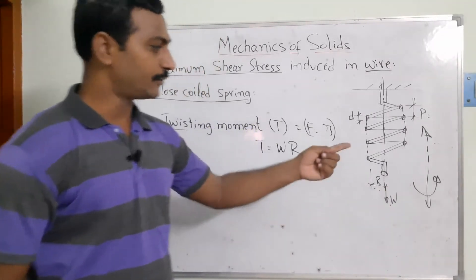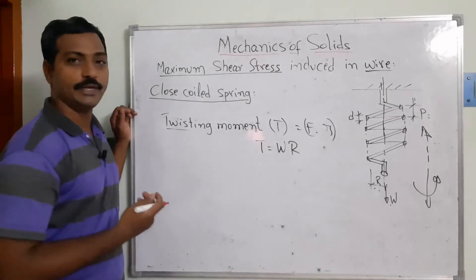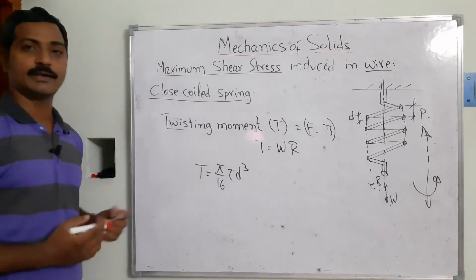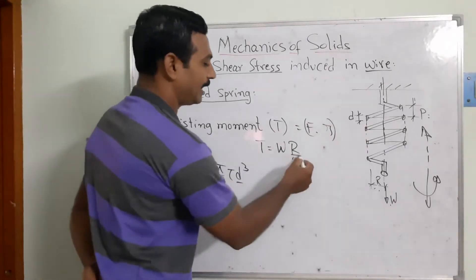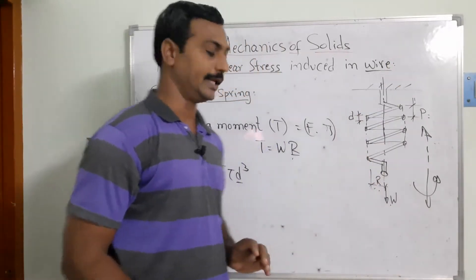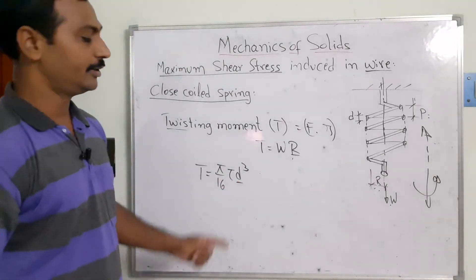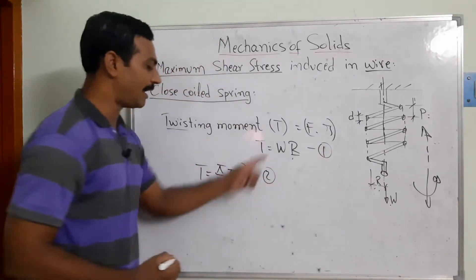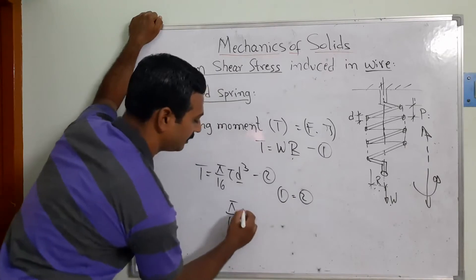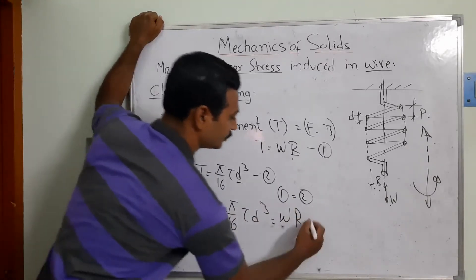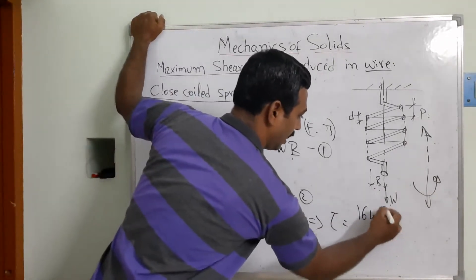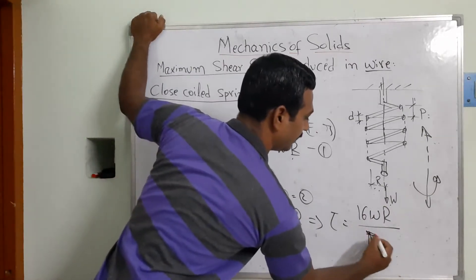The member is also subjected to torsional loads due to the motion. From the torsion formula, T = (π/16) × τ × d³. Setting this equal to W × R and comparing the two equations — (π/16) × τ × d³ = W × R — we solve for the shear stress: τ = 16WR / (π × d³). This is how we calculate the shear stress developed in the coil.